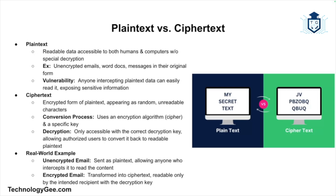Here's a real world example: imagine sending an unencrypted email over the internet. The email is in plain text, meaning anyone who intercepts it can read its contents. If you encrypt the email, however, the contents become ciphertext, and only the intended recipient who has the decryption key can read it. Transitioning from plain text to ciphertext is the foundation of securing sensitive information.